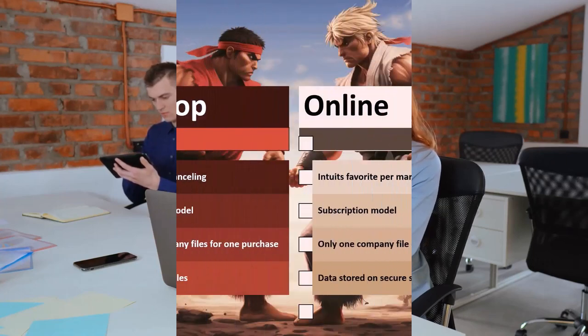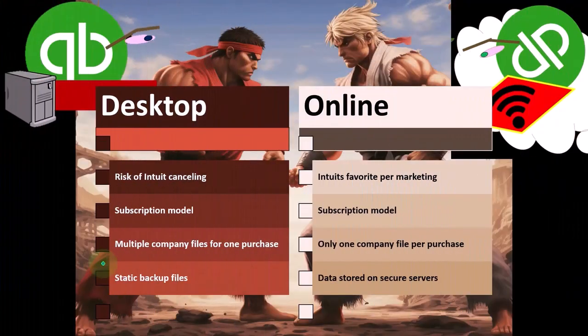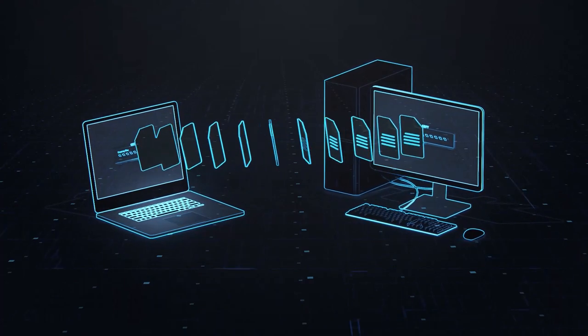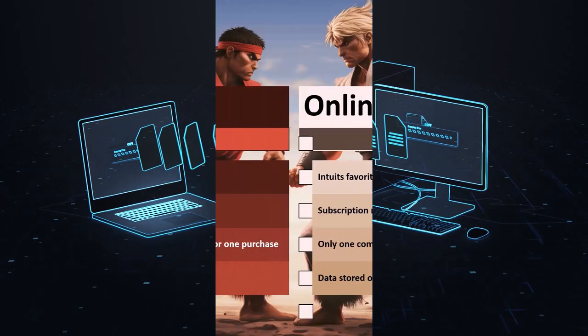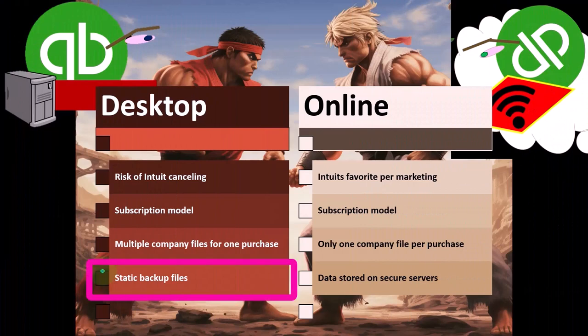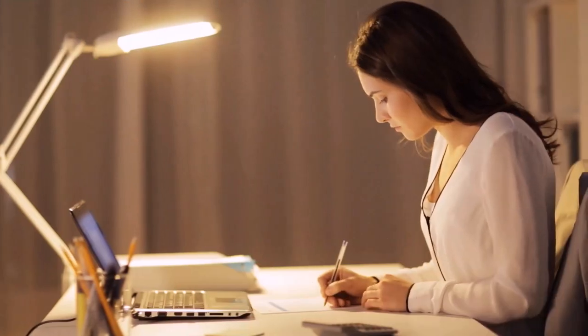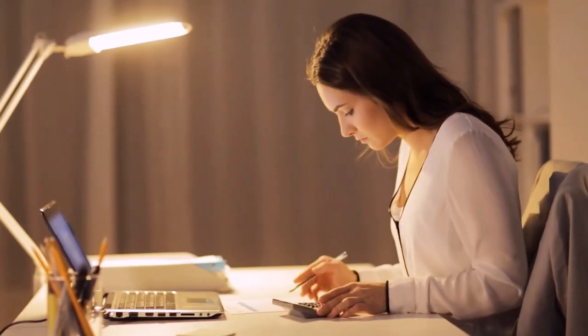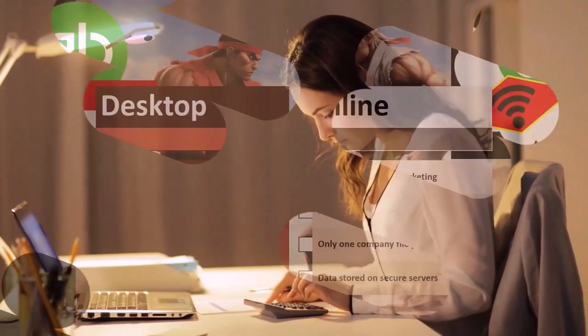The static backup files are useful for troubleshooting — you can see what happened from a certain date, or identify when something went wrong. With an online course like this one, the static backup files can also be used to jump forward in a practice problem, allowing you to have the exact data we have on our side without having to work through a very long practice problem to get there.